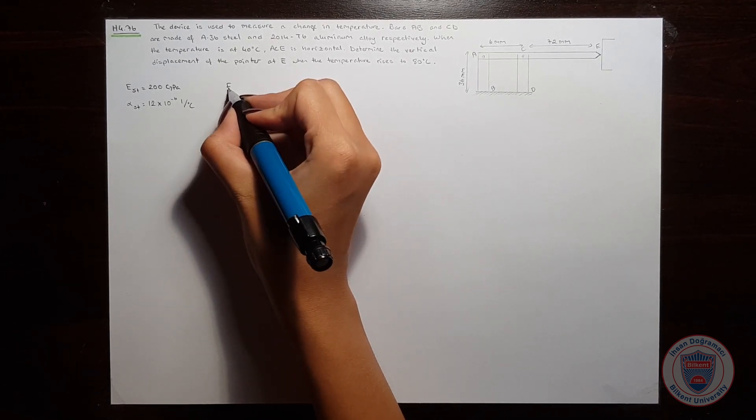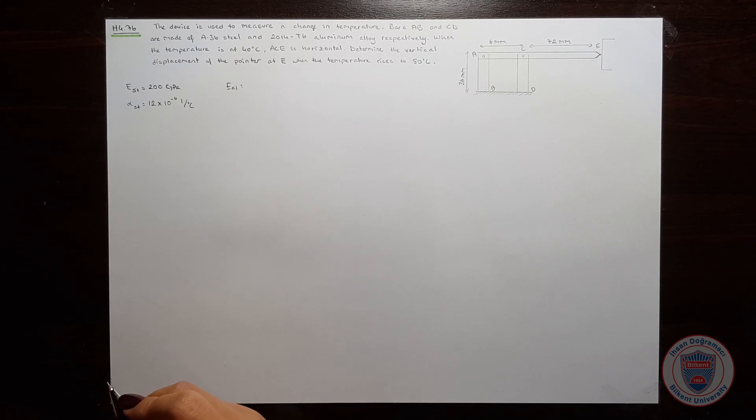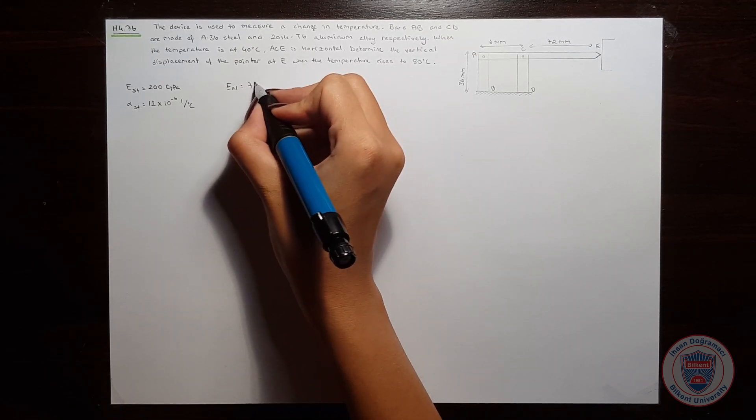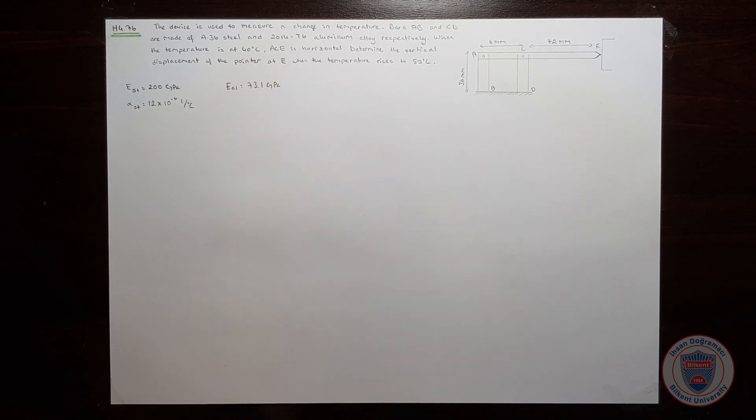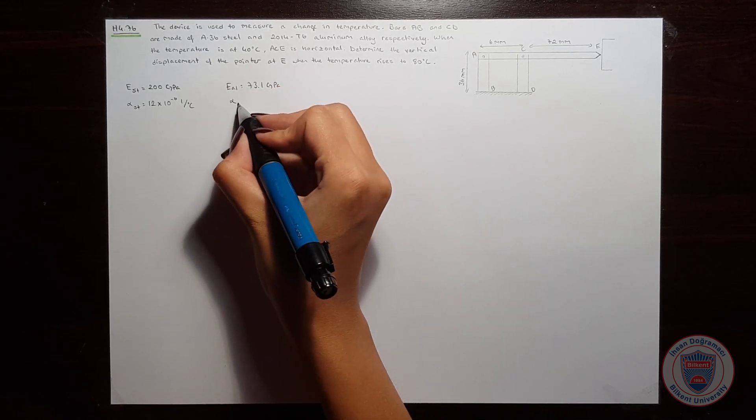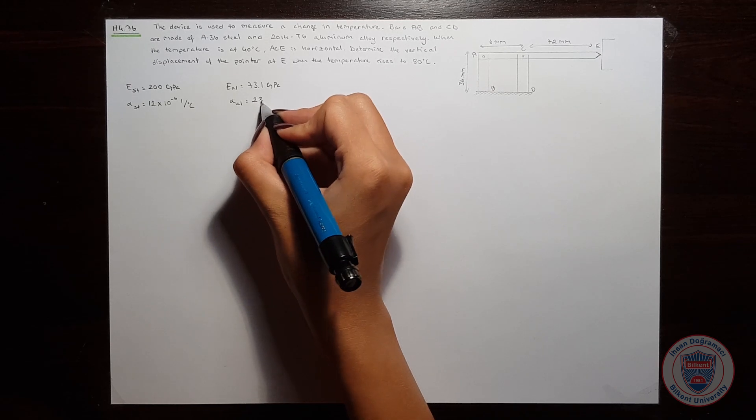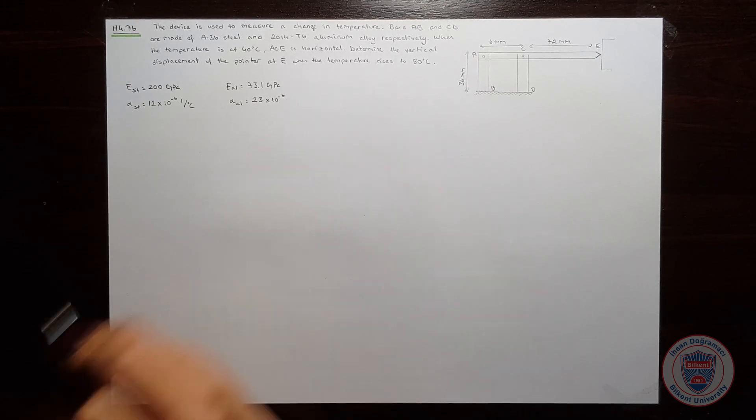For aluminum, Young's modulus is 73.1 GPa and alpha is 23 times 10 to the power of minus 6.